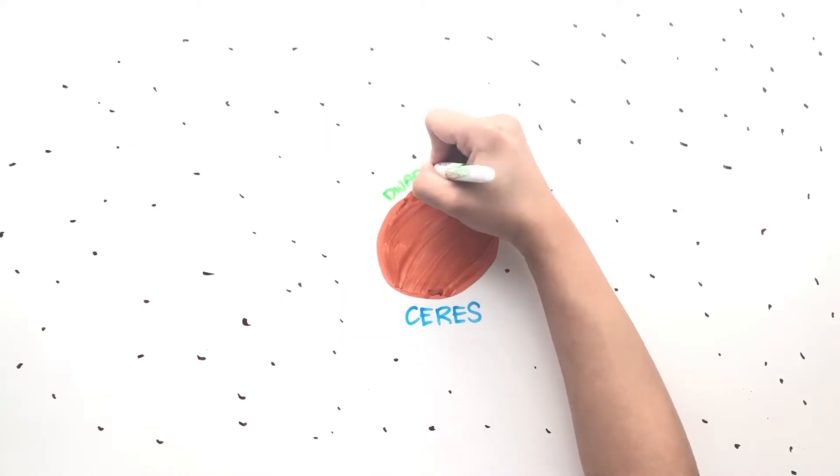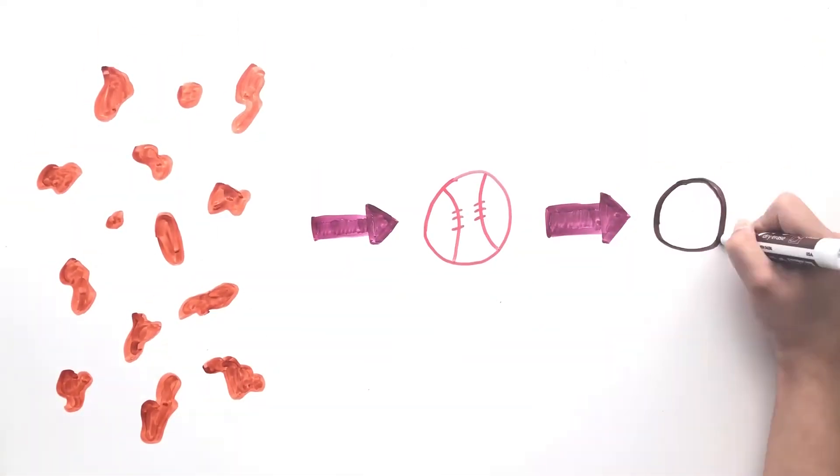It has also been classified as a dwarf planet and accounts for a quarter of all the mass of all the known asteroids in the main belt. If all the asteroids were combined into a ball, they would be smaller than the Earth's moon.